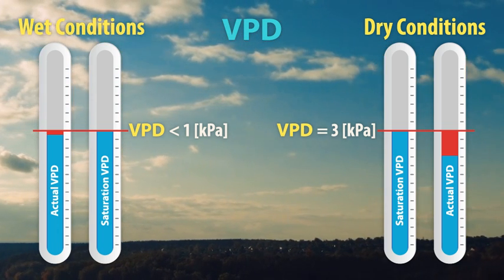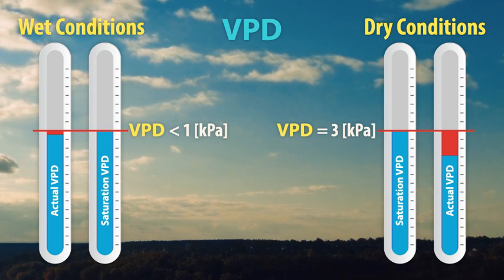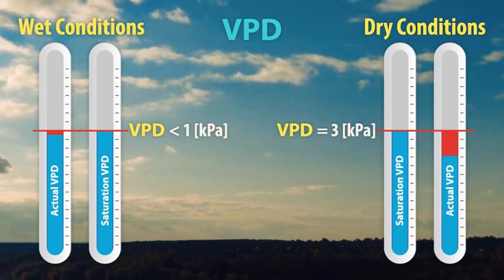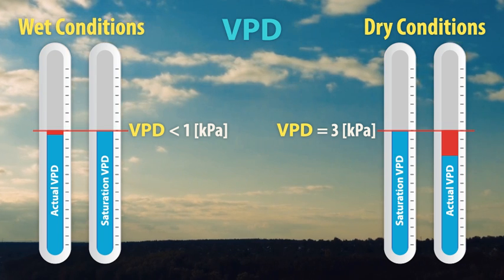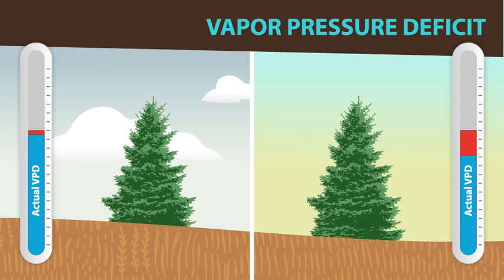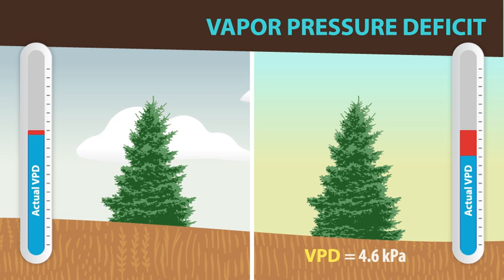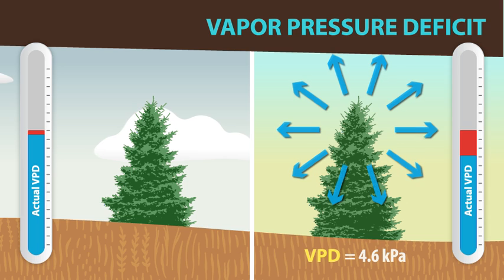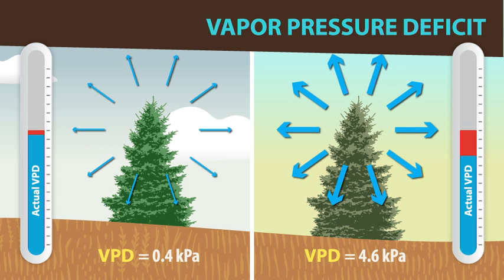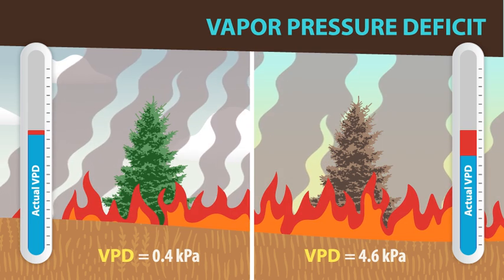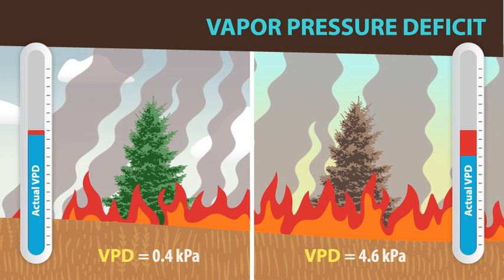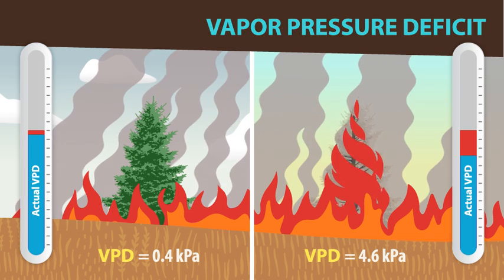The effects on fuels are significant. Think about the VPD from a living plant's perspective. A plant in an area with a high vapor pressure deficit is likely to lose more moisture to the air than a plant in an area with a lower VPD. Which one of these plants do you think is more stressed and would be available to burn sooner? Well, the drier plant in the area with a higher VPD, of course.